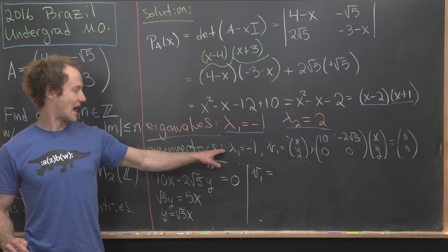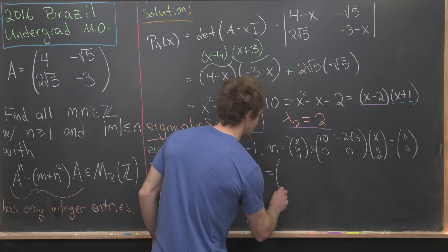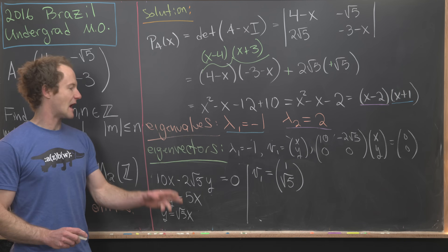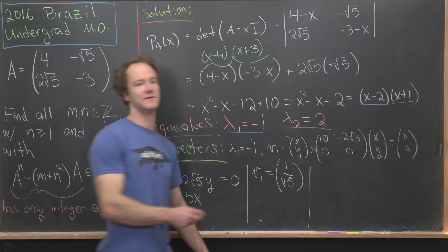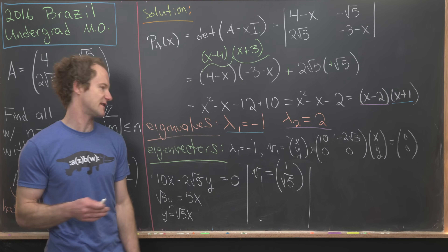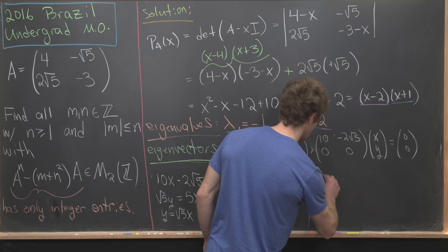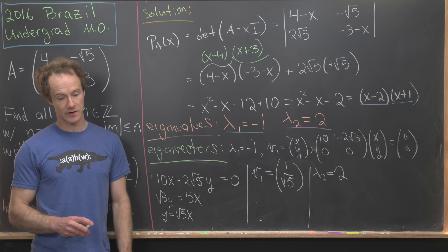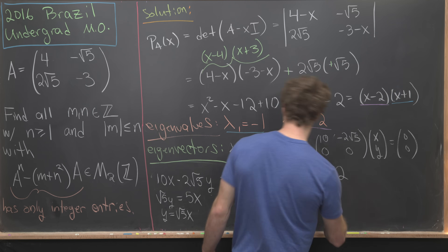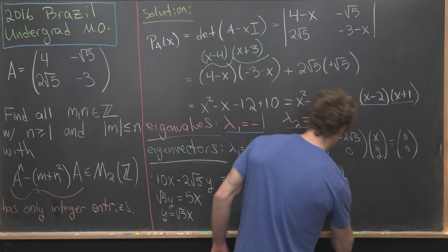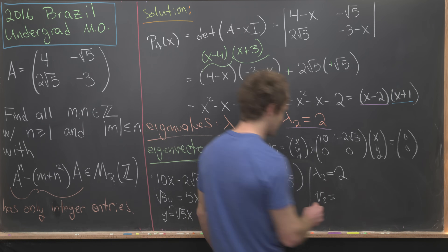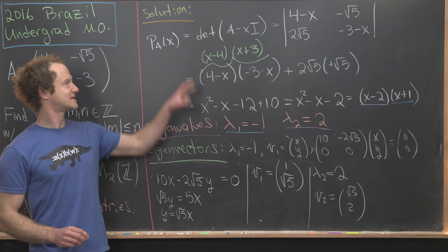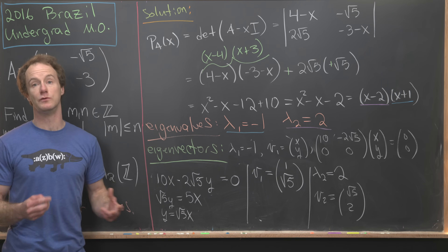Skipping the analogous calculation for v₂, with λ₂ = 2 we find the second eigenvector v₂ = (√5, 2). To summarize: A has eigenvalue −1 with eigenvector v₁ = (1, √5) and eigenvalue 2 with eigenvector v₂ = (√5, 2).